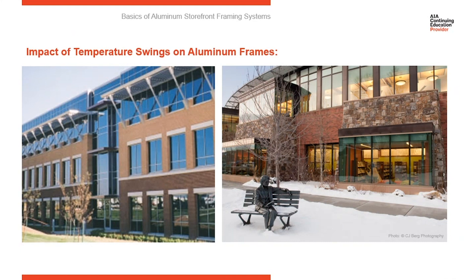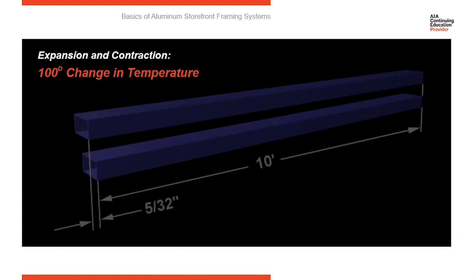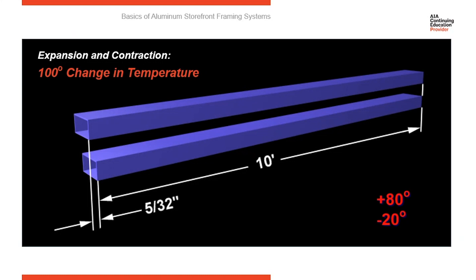Aluminum is very conductive and therefore it can expand and contract a considerable amount. A 100-degree temperature change in aluminum can cause a 10-foot section to grow 5/30ths of an inch. And I'm not talking about 100-degree air temperature — I'm talking about surface temperature, because the surface temperature of aluminum can rise much faster than air temperature.